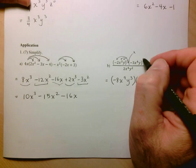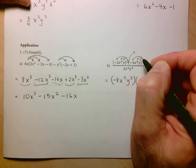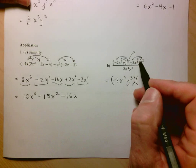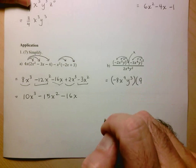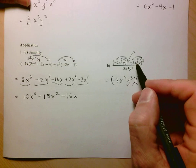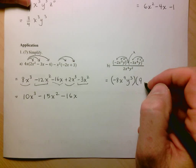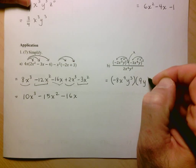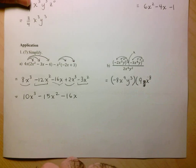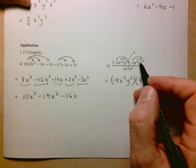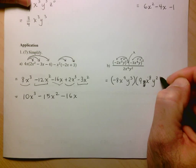Now for the second monomial, distribute that exponent to each part. Negative 3 squared: negative 3 times negative 3 is positive 9. x to the 4 to the power 2 — power of a power — 4 times 2 is 8, so x to the 8. And then y to the 1 squared: 1 times 2 is 2, so y squared.